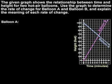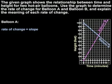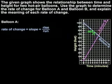To determine the rate of change for balloon A, remember that rate of change means the same thing as slope, which can be found using the ratio rise over run between any two points on the line. So we choose two points on the line for balloon A. To get from one point to the next, we go down 50 units, so our rise is negative 50, and we run one unit, so our run is positive 1. Therefore, the rate of change, or slope, or rise over run, is negative 50 over 1.